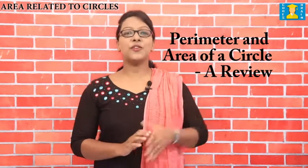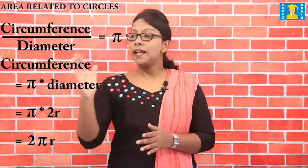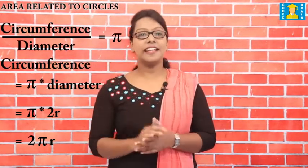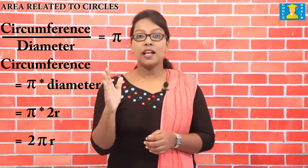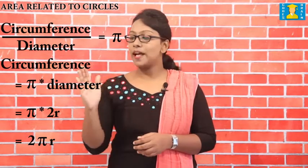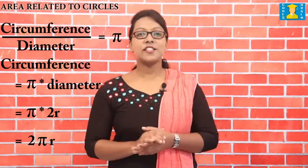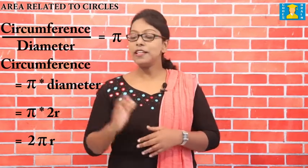Now we are going to see the first topic: perimeter and area of a circle — a review. Recall the distance covered by travelling once around a circle, its perimeter, usually called its circumference. The circumference of a circle bears a constant ratio with its diameter. This constant ratio is denoted by the Greek letter pi, where pi equals circumference divided by diameter. From this, circumference equals pi into diameter, which is pi into 2r, so the circumference is 2πr.